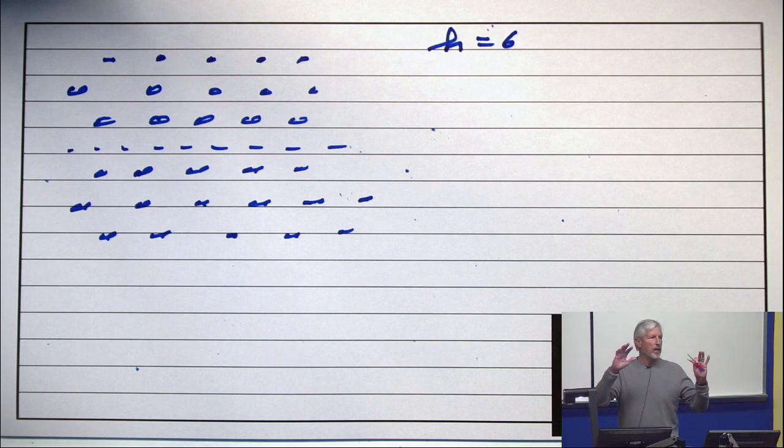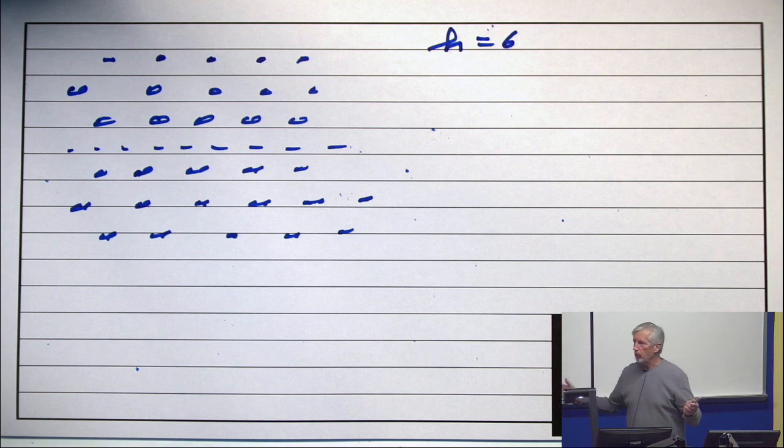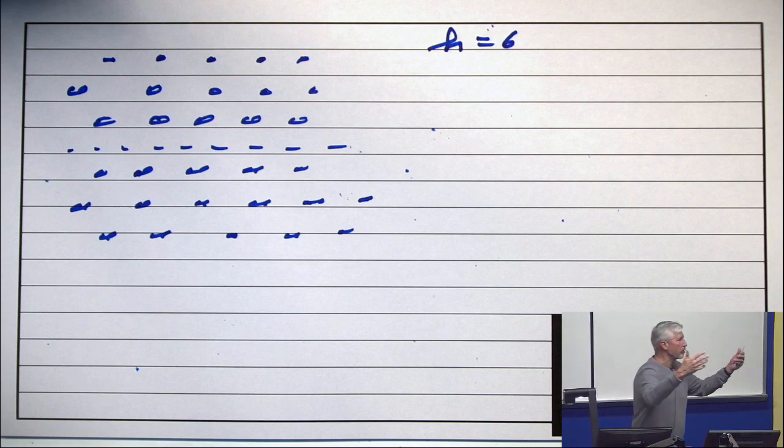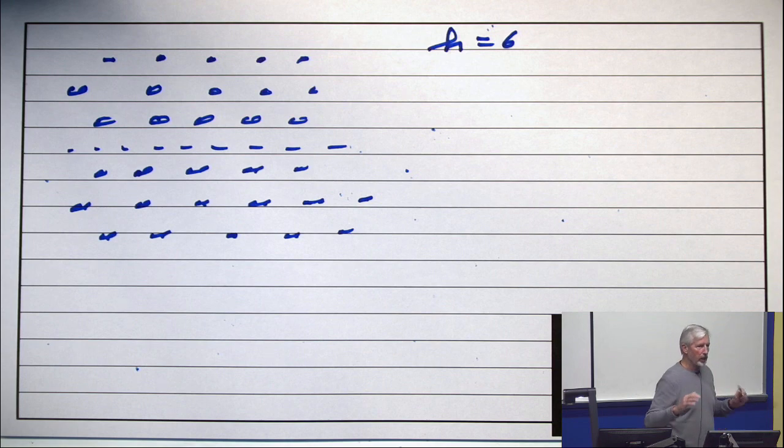Now I haven't drawn any of the lines that make this into a Poset. Just imagine that there is a suitable set of lines up here that make this a ranked Poset of height 6.